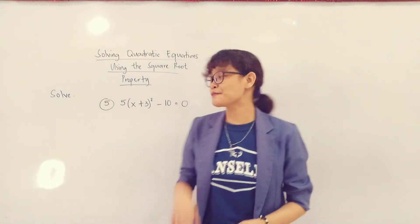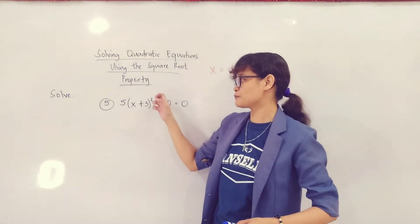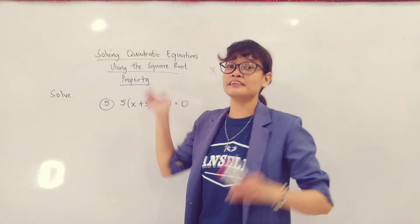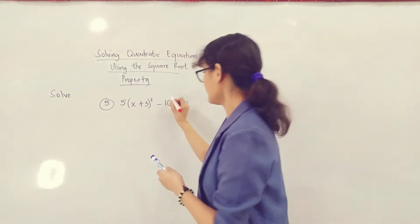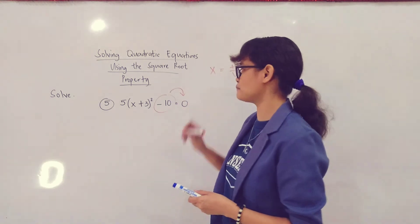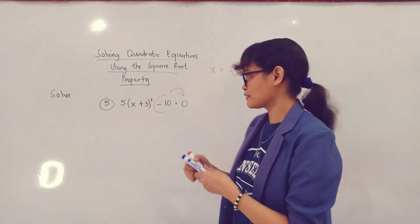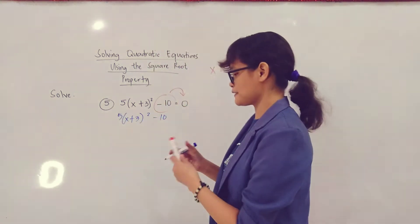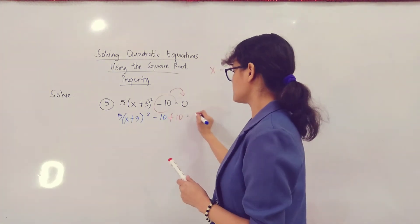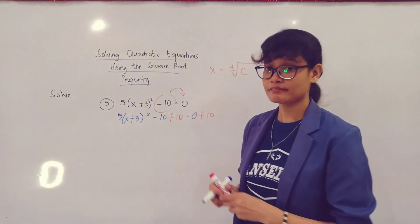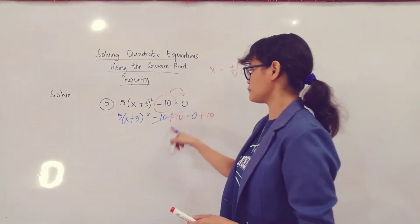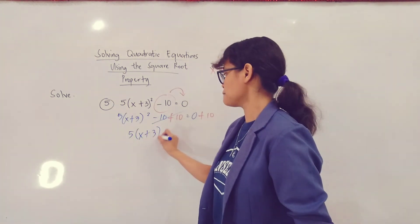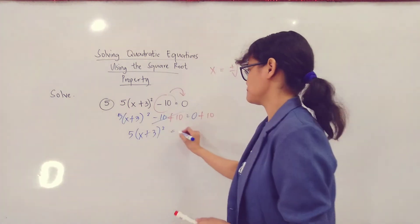So for our last example, we have 5 times the quantity x plus 3 squared minus 10 equal to 0. Again, first step: transpose the constant number to the other side of the equation. Negative yung gusto mong ipad, so you're going to apply the addition property of equality. So you'll have 5 times the quantity x plus 3 squared minus 10 plus 10 equal to 0 plus 10. So negative 10 plus 10 is already equal to 0. Yung natin na lang is 5 times the quantity x plus 3 squared equals to 10.